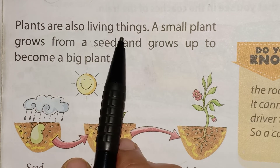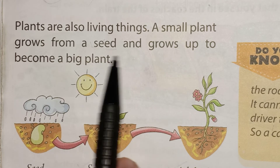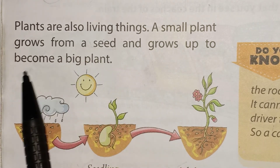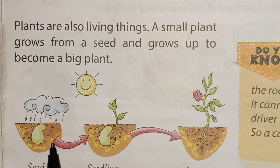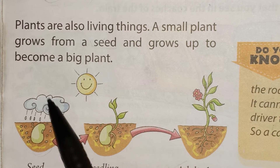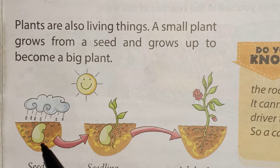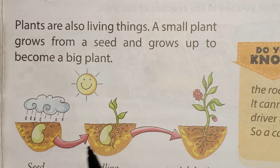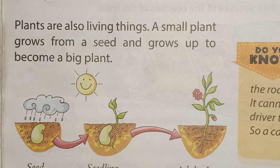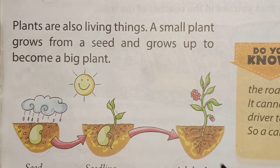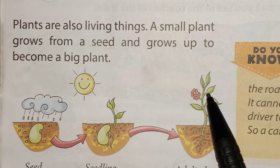Plants are also living things. A small plant grows from a seed and grows up to become a big plant. Here there is a small seed inside the soil. When it gets water and sunlight, it starts growing — the first root and shoot come out, that is the seedling, and then it becomes a big adult plant. So all plants are also living things.